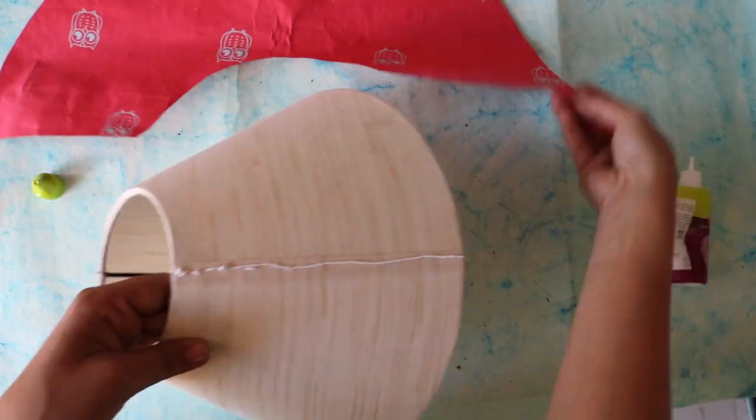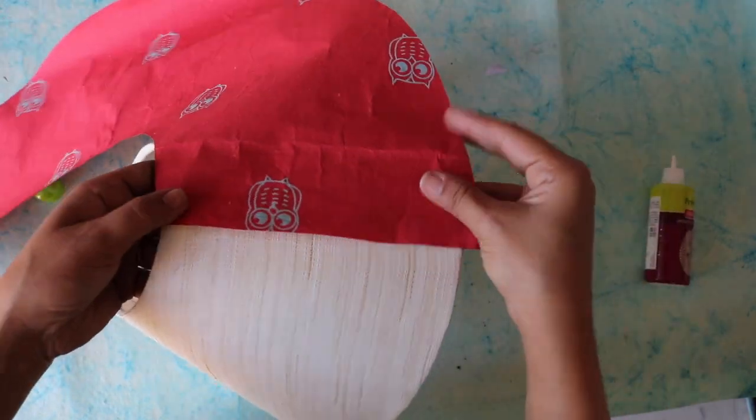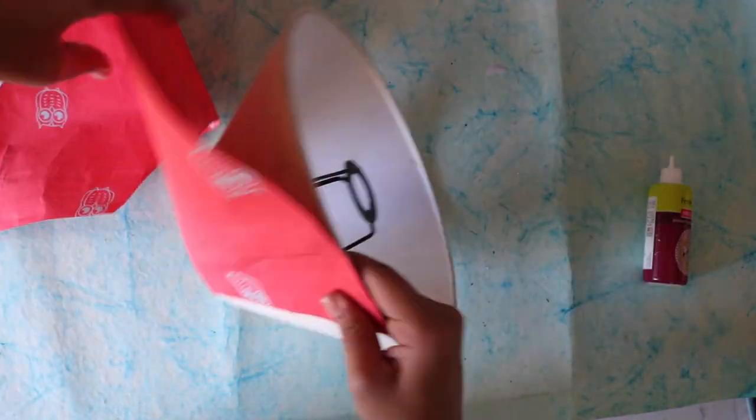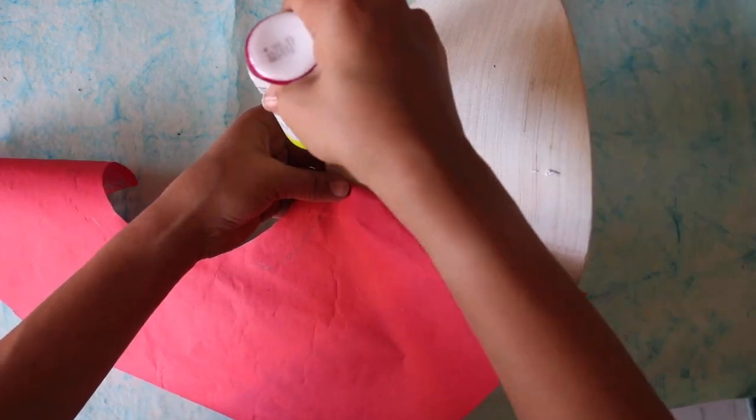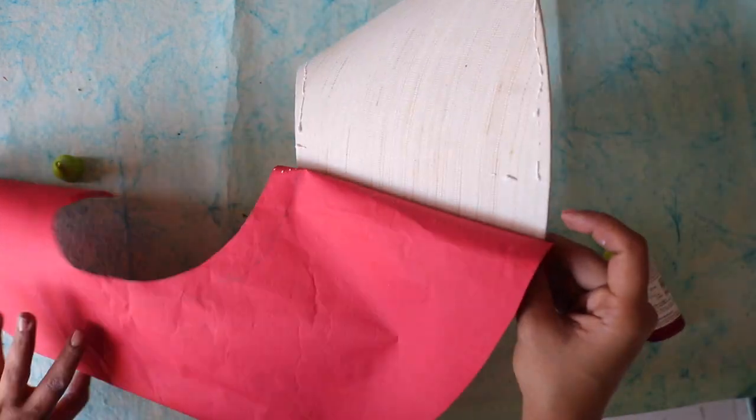With the help of fabric glue, stick the cutout to the lampshade. The extra sheet extending from the shade at both ends should be glued to the inside, thus giving it a neat look.